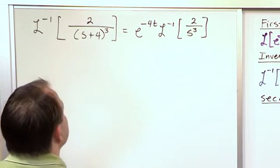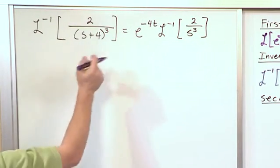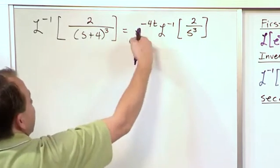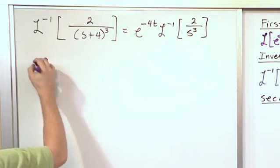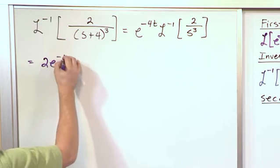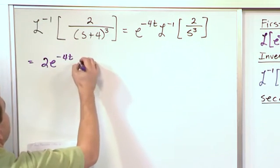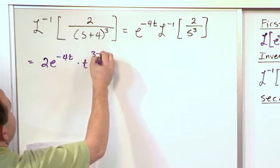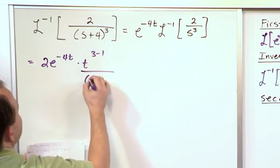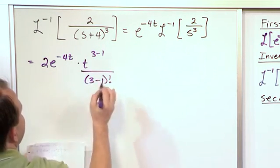So then, I say, I'm going to have a 2. This 2 can come out. So it would be 2e to the negative 4t. And then when I take that inverse Laplace, it's going to be t to the 3 minus 1 because it's cubed, over 3 minus 1 factorial like that.